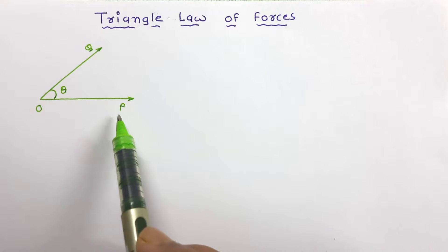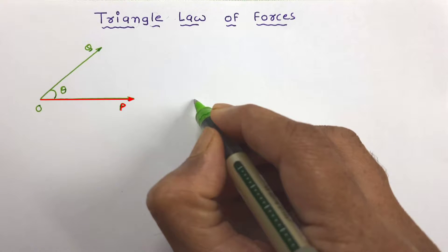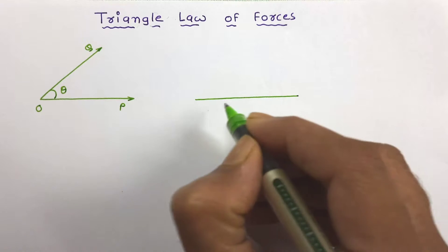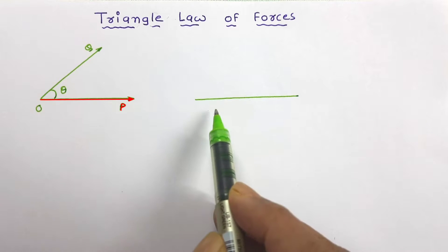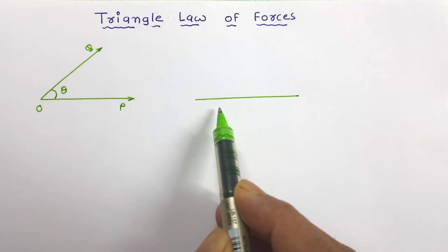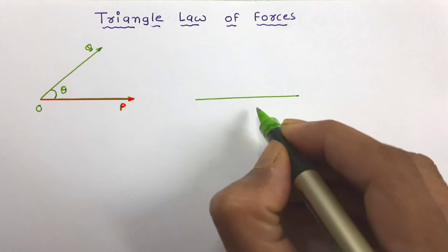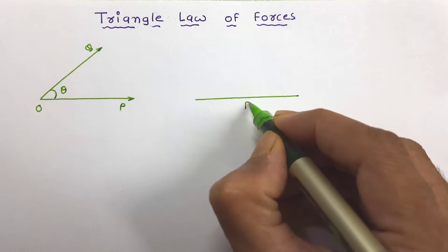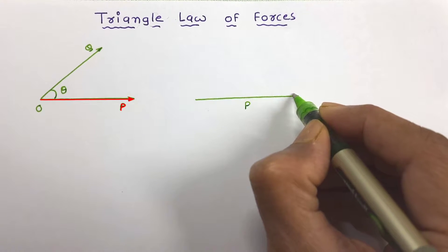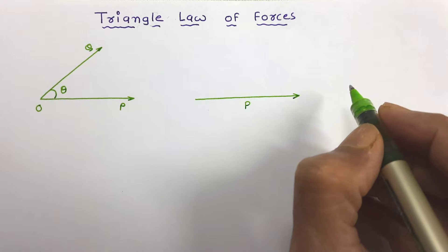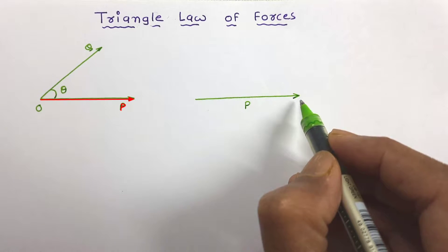This force has magnitude P. To some scale, suppose we draw this force graphically. According to the magnitude of force P, if we take a scale like 1 cm equal to 10 kN and draw this force graphically, this line shows the magnitude of force P. As force is a vector, we can represent it by its direction also. This is the direction of force P. This is the tail of the force and this is the head of the force.